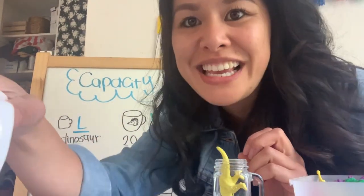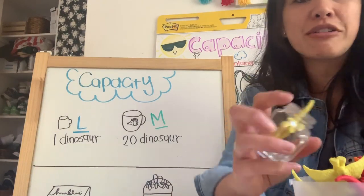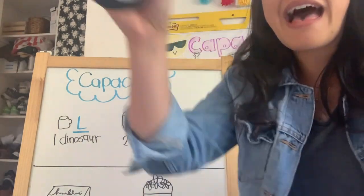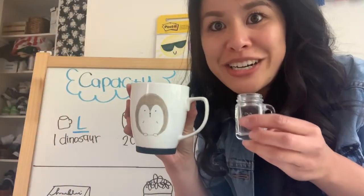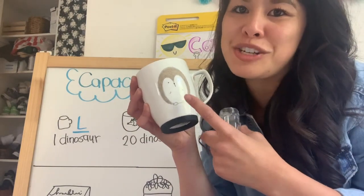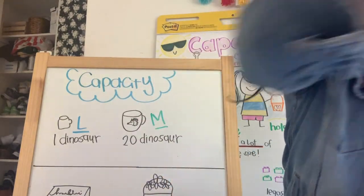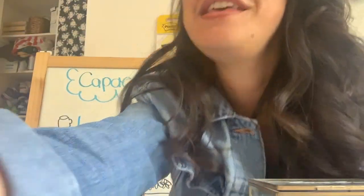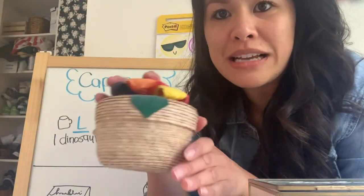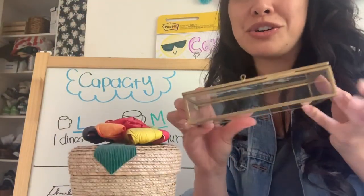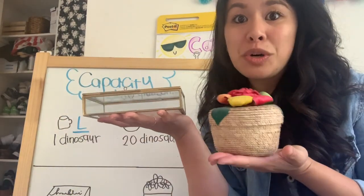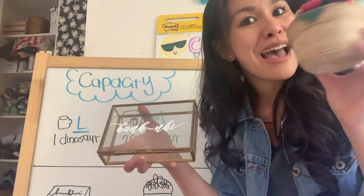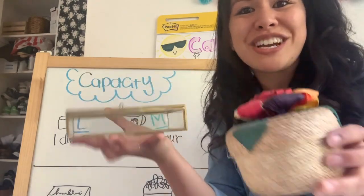You ready to help me measure one more thing? I'm going to show you another container from around my house. Remember, a container is anything that can hold things. We already know I'm going to use the hedgehog cup for my smoothie because it holds way more. Here are some other containers: I have this jewelry box that has my name on it, and this cute little basket that one of my students got me from Mexico. Let's make a prediction — which one has more capacity, the jewelry box or the little basket?